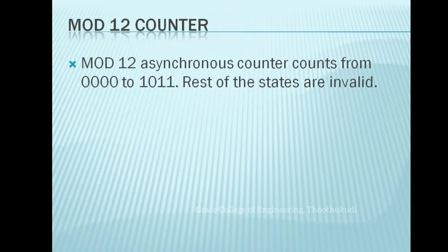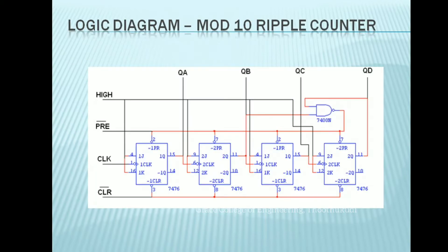For mod 12, the counter counts from 0000 to 1011 and the rest of the states are invalid. In the logic diagram of the mod 10 ripple counter, the counter is asynchronous — only the first flip-flop receives the clock input directly. For remaining flip-flops, the clock is fed from the output of the previous stage. The input to the NAND gate is taken from QB and QD.